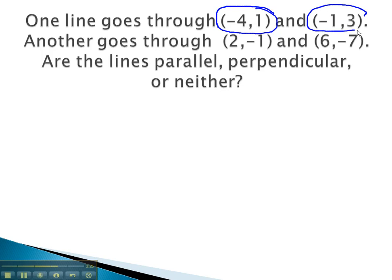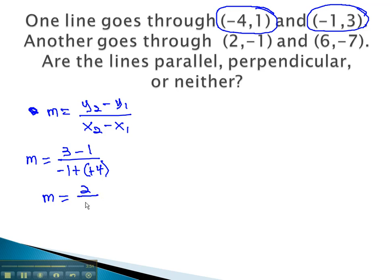Let's find the slope of the first line using the formula, m equals y2 minus y1 over x2 minus x1. So our slope is y2, or 3, minus 1, over x2, which is negative 1, minus negative 4. Subtracting a negative is like adding a positive, and so we get the slope 3 minus 1 is 2 over 3. The slope of the first line is 2 thirds.